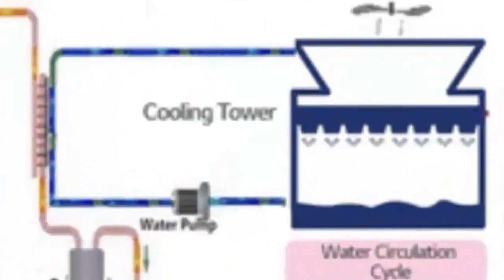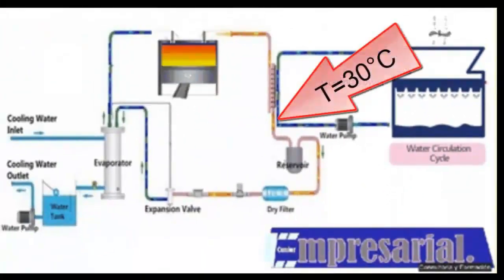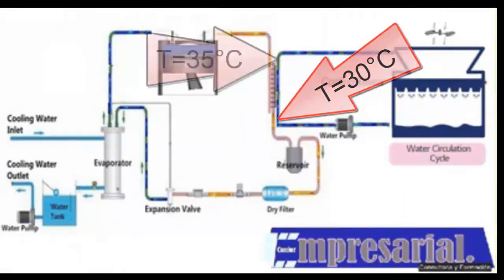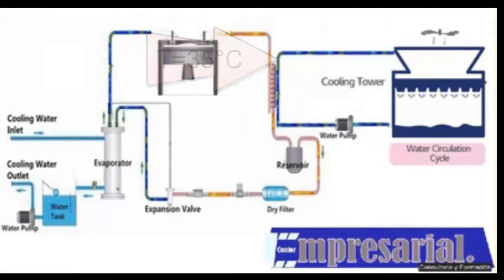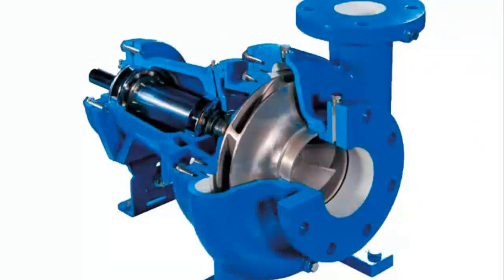Question 17: How does the fresh water circuit of the water-cooled chiller condenser work? A. There is a new centrifugal pump station, which we will call cooling tower pumps. B. The water is carried through the circuit towards the cooling tower.